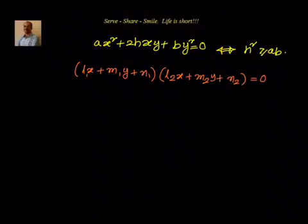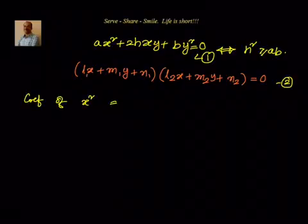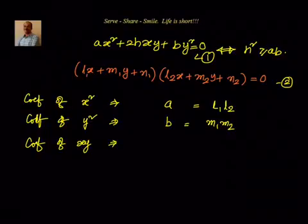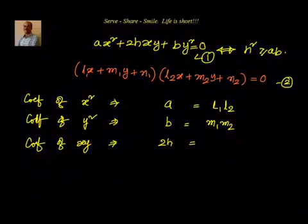Now let's multiply and compare the coefficients. The coefficient of x² tells me that from the first equation it is A, and from the expansion it is L₁·L₂. Similarly, the coefficient of y² gives B = M₁·M₂. Then for the coefficient of xy: from the first equation we have 2h, and from the expansion we get L₁·M₂ + L₂·M₁. So 2h = L₁M₂ + L₂M₁.